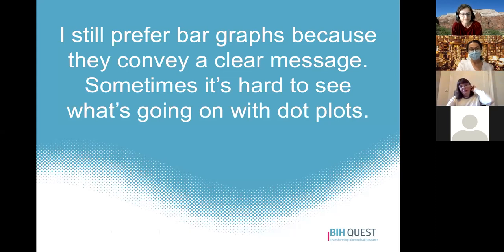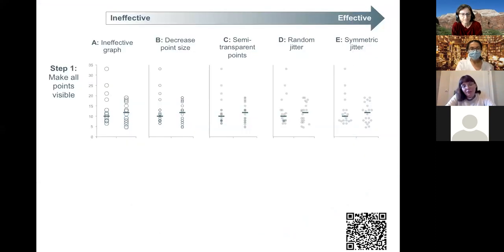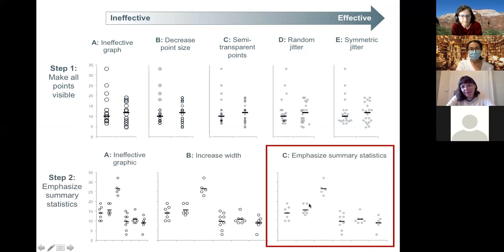Some still prefer bar graphs because they convey a clear message. The good news is you can have both a clear message and a dot plot. The best strategy is symmetric jittering — spreading points symmetrically across each group so the eye can trace the outline of the data distribution. Then emphasize the mean or median line and de-emphasize the data points and axes, so you immediately get information about the general trend while still being able to critically evaluate the data.